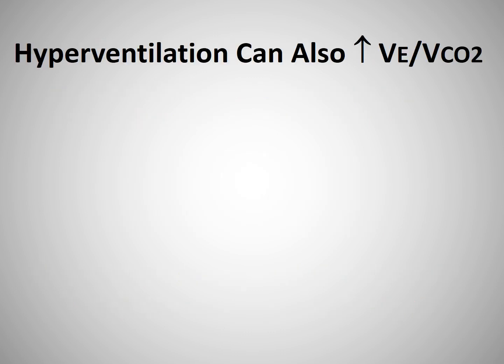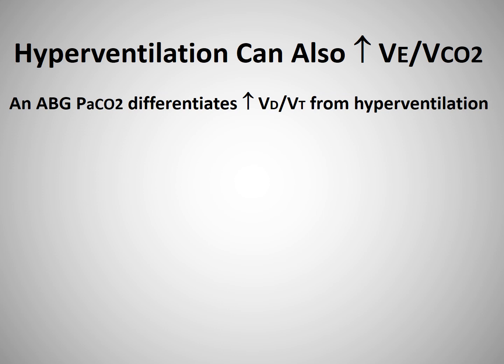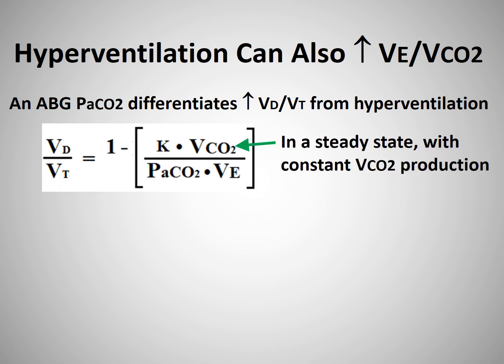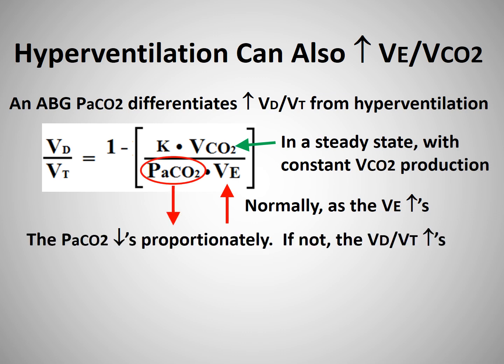We also need to be aware that an excessive hyperventilatory response can increase the VE to VCO2 ratio when there is no abnormality of dead space ventilation. An arterial blood gas PaCO2 can differentiate these two causes for the increased VE to VCO2. In a steady state, if the subject's VCO2 remains constant, normally as the VE increases, the PaCO2 should decrease by the same proportion. If the PaCO2 does not decrease proportionately, the VD to VT ratio will increase.